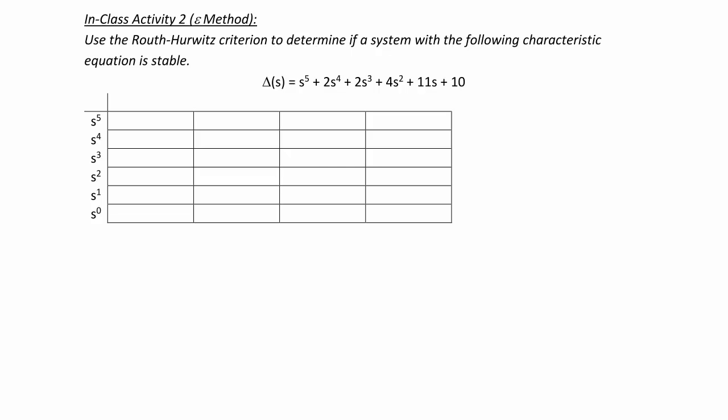Let's try another example that uses one of our special cases, which means we need to apply the epsilon method. Use the Routh-Hurwitz criterion to determine if a system with the following characteristic equation is stable. Delta of s is equal to s to the fifth plus 2s to the fourth plus 2s cubed plus 4s squared plus 11s plus 10.